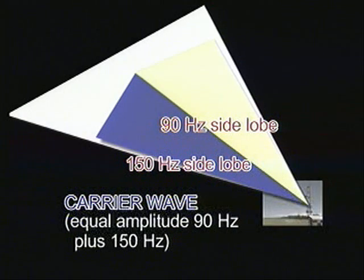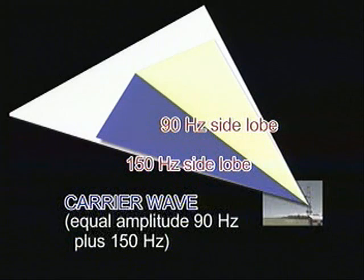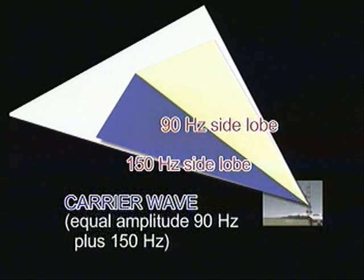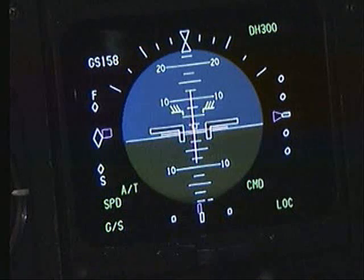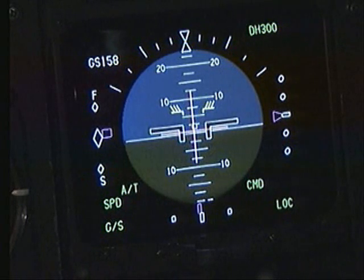As a result, a complex interference pattern is formed, effectively creating upper and lower side lobes as shown in the diagram. The null between the 90 and 150 Hz side lobes defines the glide slope.